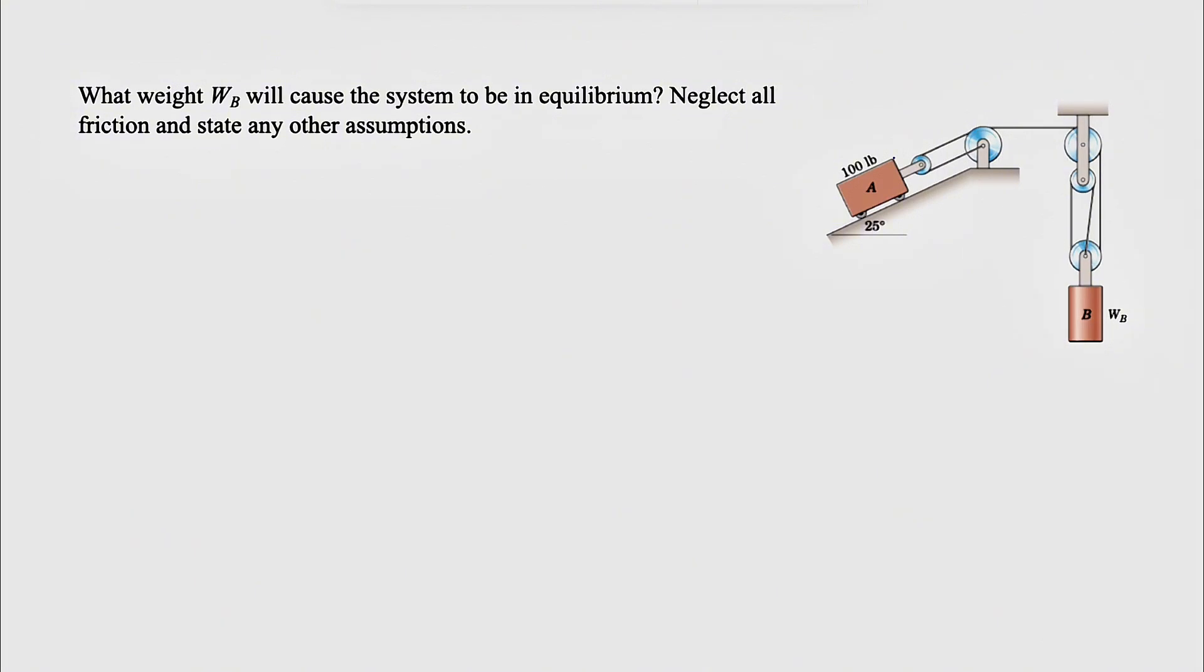So we are looking for the weight and we're going to start with the free body diagram of this weight and the pulley. We're going to have one single cable that goes around this pulley over this one and here and comes back to point B. So we have one single cable which means we have one single tension in each point of this cable.